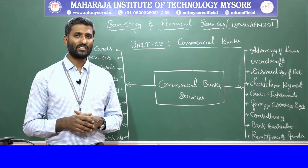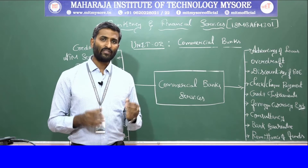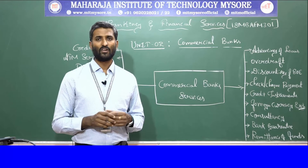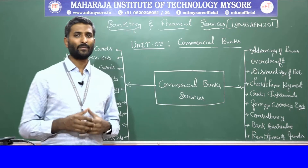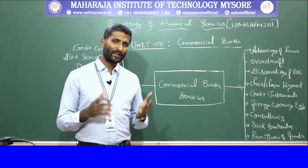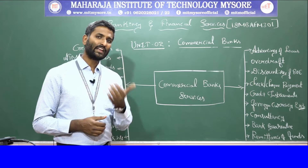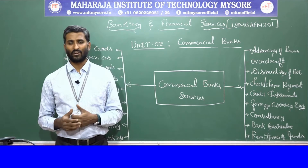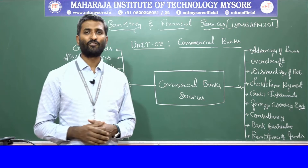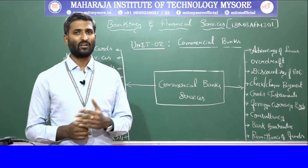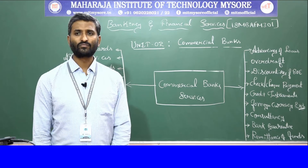When a bank gives a loan, it opens an account in the name of the loan taker and does not pay in cash but allows the borrower to draw money according to their requirement. By granting a loan, the bank creates credit or deposit. If a loan of 10 lakh rupees is sanctioned, the borrower does not need to claim all 10 lakhs at once — they can claim 2 lakhs, 3 lakhs, or 4 lakhs depending on requirement. This limits the manipulation or misuse of funds.